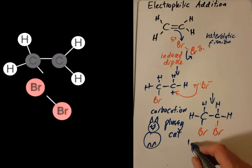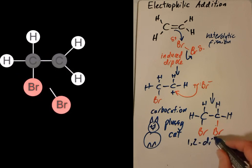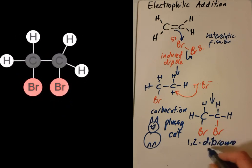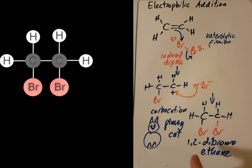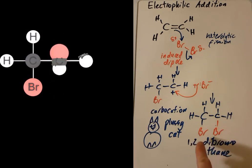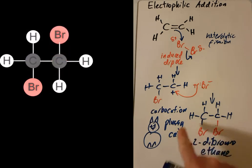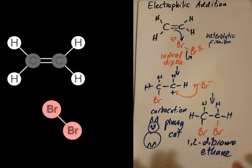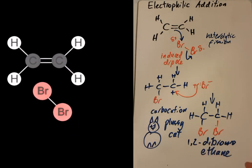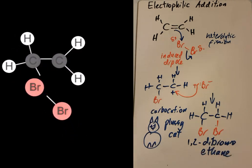So this is 1,2-dibromoethane. Note that you've got to give the numbers because the bromines could both be on the first carbon, 1,1-dibromoethane. But that isn't what's formed in this addition reaction. You get the 1,2-dibromo.